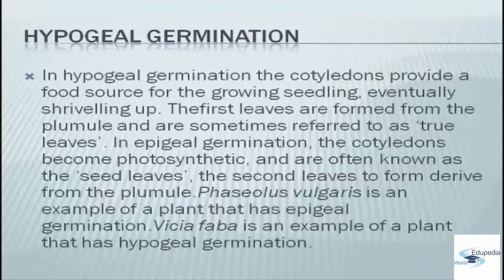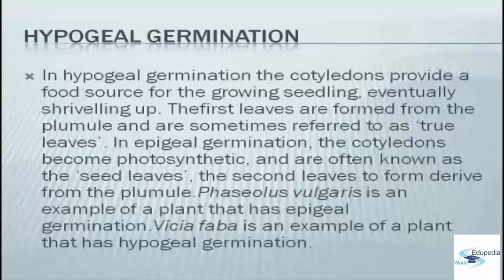In epigeal germination, the cotyledons become photosynthetic and are often known as seed leaves. The second leaves to form are derived from the plumule, and Phaseolus vulgaris is an example of a plant with epigeal germination. For hypogeal germination, an example is Vicia faba.